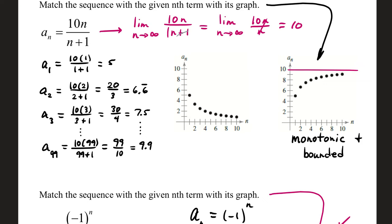A sub 2, 10 times 2 over 2 plus 1, that's 20 over 3. That's a little bit more than 6 and a half, 6 and 2 thirds. Our third term was 10 times 3 over 3 plus 1, 30 over 4, that's 7 and a half. And that was enough for us to pick this second graph.